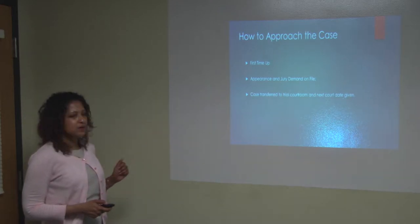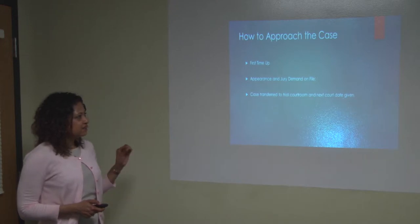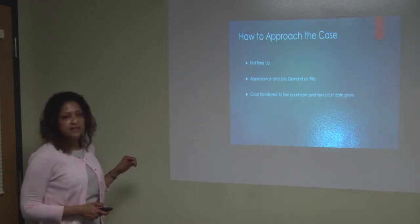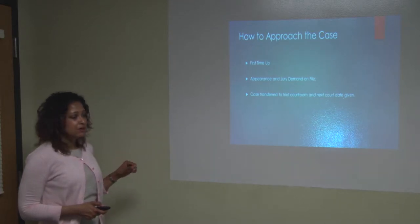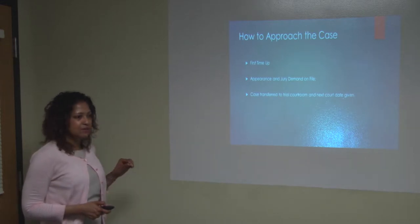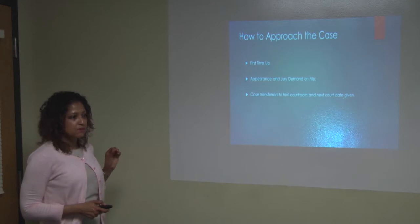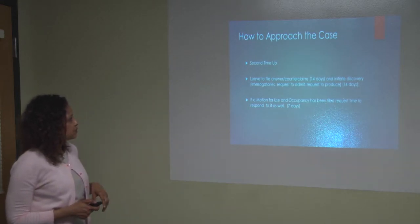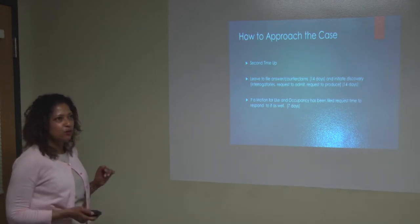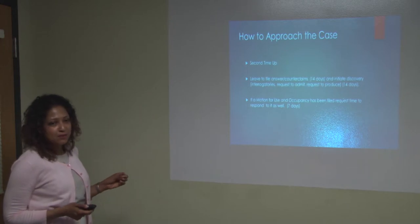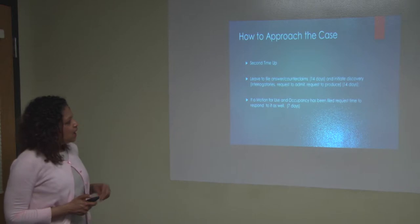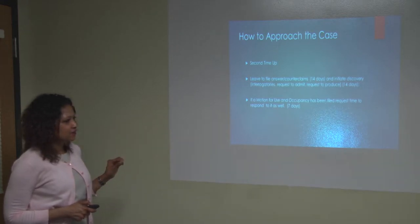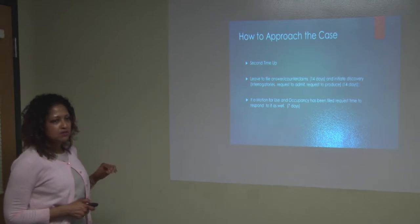The first time you go in, you want to get leave to file your appearance and the jury demand. At the Daley Center in Chicago, you'll be transferred to a trial courtroom and given a next date — those cases go from the 14th floor to the 13th floor for trial assignment, where they'll set a discovery schedule. The second time up, they'll ask for leave to file the answer or counterclaim — generally they give you 14 days. Everything in landlord-tenant tends to be 7 or 14 days. If you've asked for a jury trial and discovery, the landlord may file what's called a motion for use and occupancy.